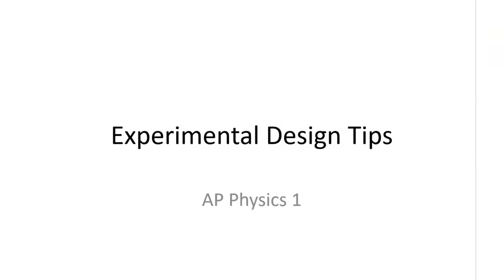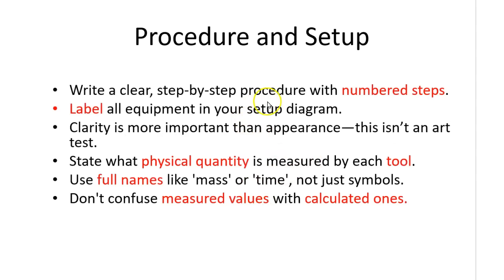Now I'm going to give you my top tips for experimental design questions. If you're asked to write a procedure, make sure you write it clearly, step-by-step, with numbered steps. If you're drawing a diagram, make sure to label all the equipment. Remember that clarity is more important than appearance. This isn't an art test. If you are using any sort of tool to measure things, make sure you state what tool you're using and what physical quantity you're measuring. Use full names like mass or time for the variables. Don't just use symbols. So don't just use M and T.